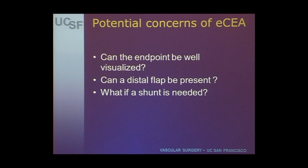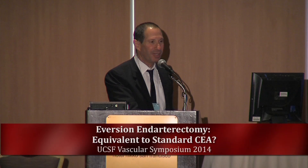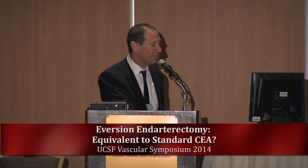I would recommend that if you're doing eversion endarterectomy with selective shunting and your intraoperative assessment — whether EEG, stump pressure, or other method — indicates that a shunt should be placed, you should likely switch over and do a longitudinal arteriotomy with a patch. Most people do feel it is a little difficult to shunt these patients, and in most studies the rate of shunting was exceedingly low.